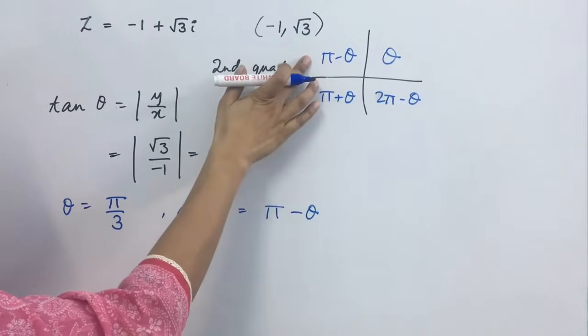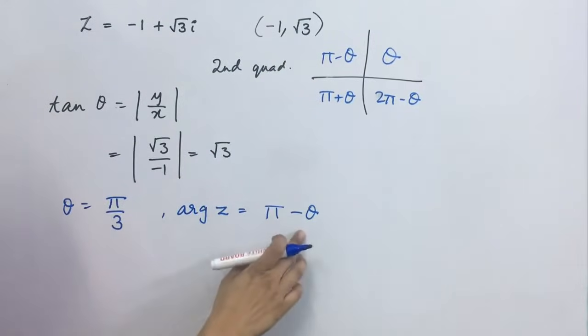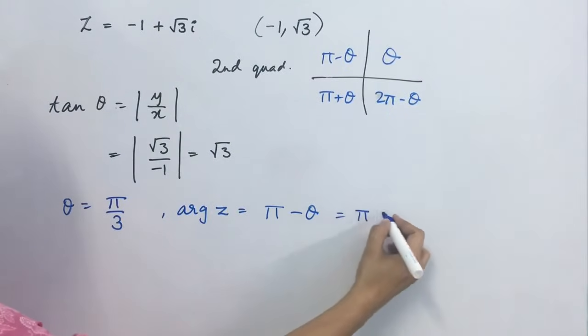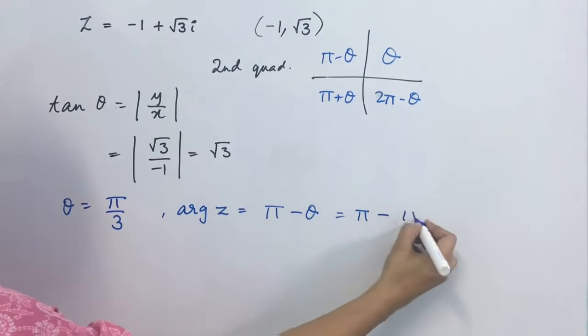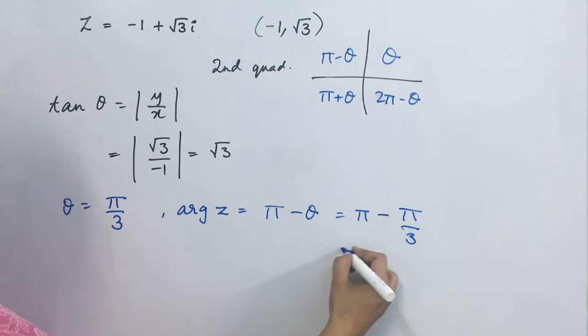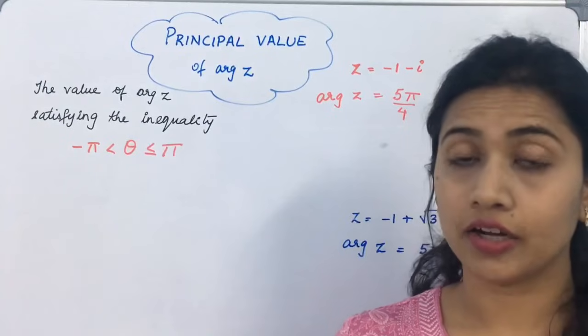Therefore, we will take argument z equal to this value. And this will come out to be pi minus pi upon 3. That will be 2 pi upon 3.